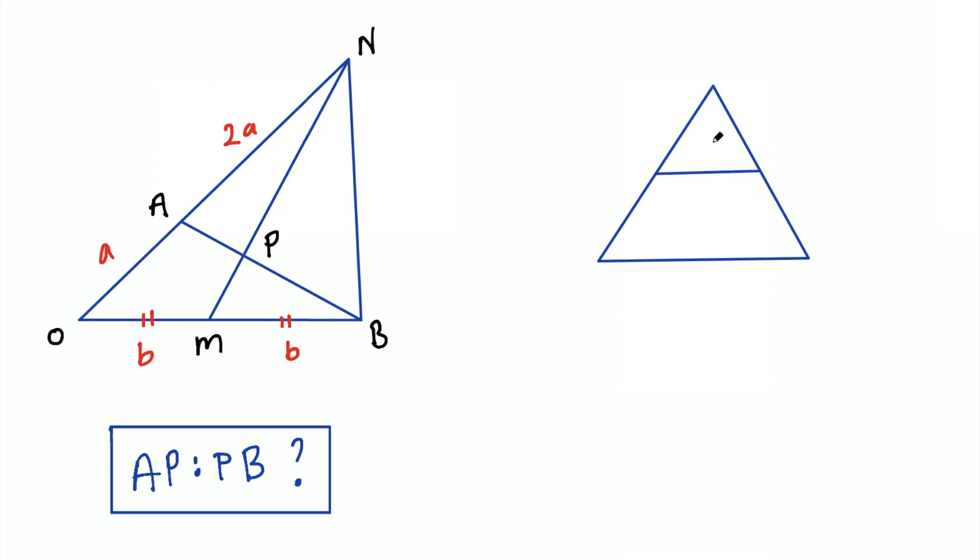So the only thing you need to solve this problem is that if you have a triangle and you have a line that intersects two sides and is parallel to the third side, then the ratio it divides one side into will be the same for the other side.